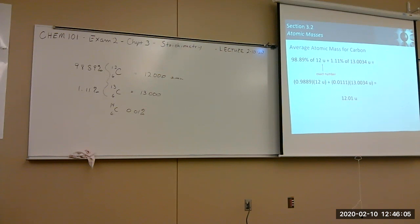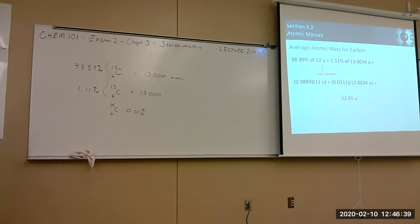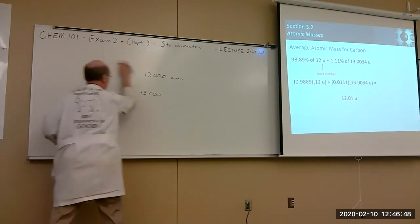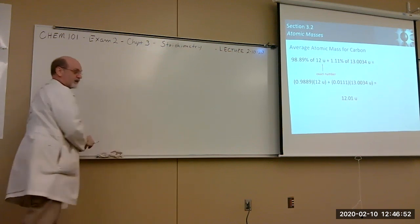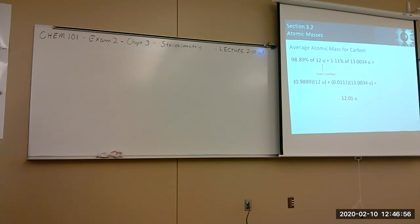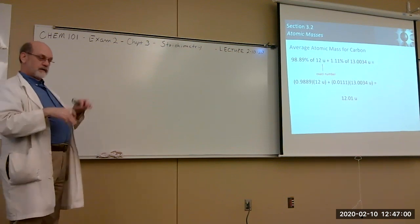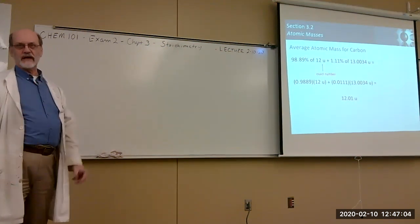Periodically, IUPAC and NIST adjust the chart, but they usually adjust it out to the fifth, sixth, seventh, or eighth digit, so it doesn't matter to us. We try to use the Earth-bound naturally occurring abundance because that's where most chemists are. The difference in isotopic abundance can actually be a fingerprint for the origin of an object when exploring other heavenly bodies.